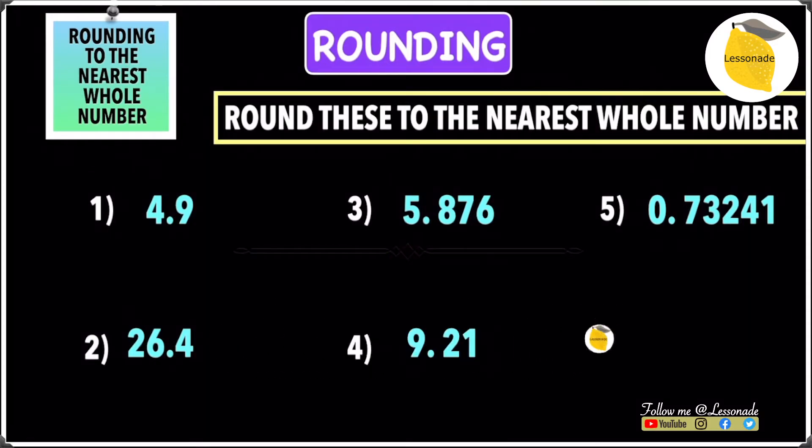Let's have a look at rounding to the nearest whole number. Let's start with the first example, which is 4.9. The whole number is obviously 4, so draw a line after the 4 and then look at the number after the line, which is 9.